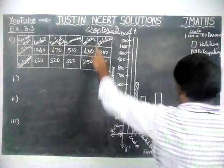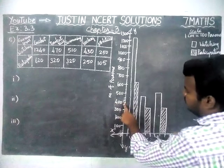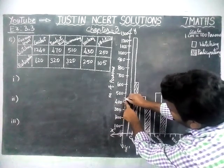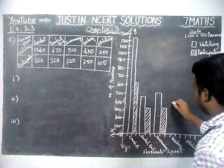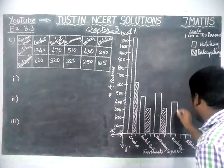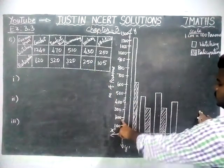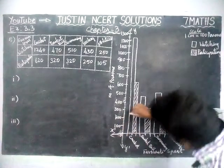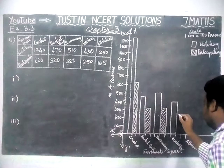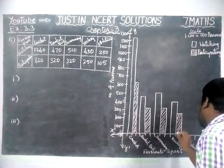Now, hockey. In hockey, 430 members are watching. 400 is there, then 410, 420, 430 — so this is 430. Next, 250 members are participating. 200 is here, and the slightly darker line at the midpoint is 250. 250 is coming here, and we use the cross line to show the differentiation.